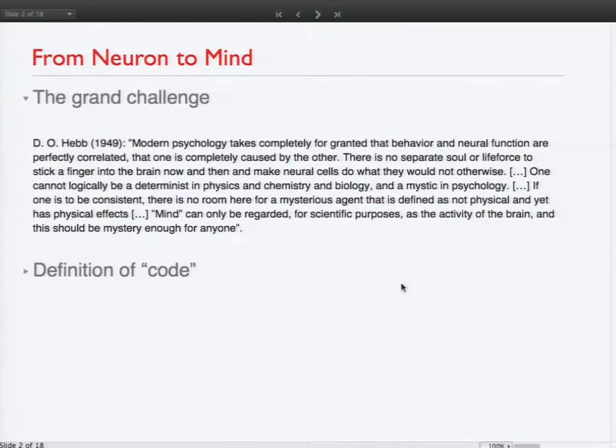Let me start with a quote from good old Donald Hebb, a Canadian psychologist who said back in 1949, modern psychology takes completely for granted that behavior and neural function are perfectly correlated, that one is completely caused by the other. There is no separate soul or life force to stick a finger into the brain now and then and make neural cells do what they would not otherwise. One cannot logically be a determinist in physics and chemistry and biology and a mystic in psychology. If one is to be consistent, there is no room here for a mysterious agent that is defined as not physical and yet has physical effects. Mind can only be regarded for scientific purposes as the activity of the brain. And this should be mystery enough for anyone.